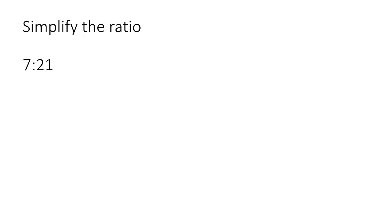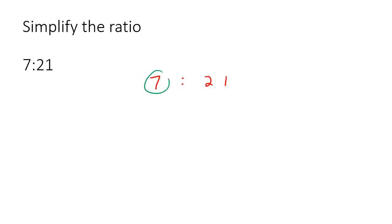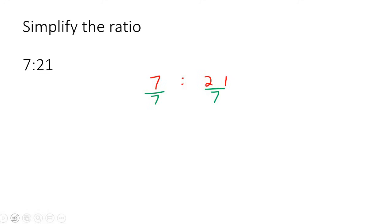Here we have seven and 21. The number two wouldn't work because two cannot go into either of these numbers. The number three won't work because three cannot go into seven. Three can go into 21, but it has to be able to go into both. Four won't work, five won't work, six won't work. The number seven will actually work because seven can go into both, so this would become a one and then this would become a three.